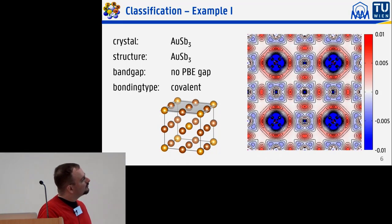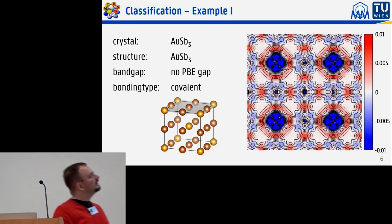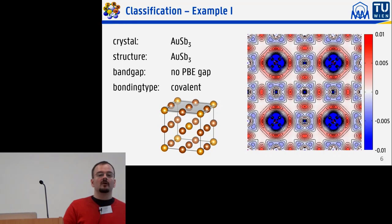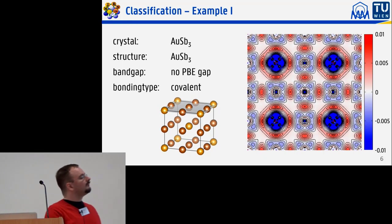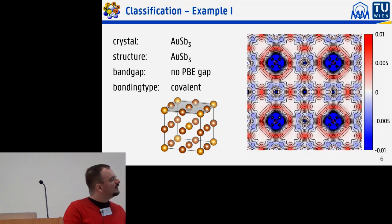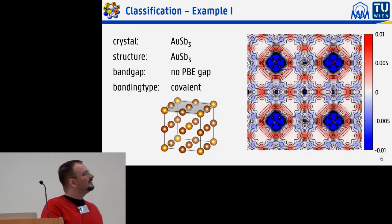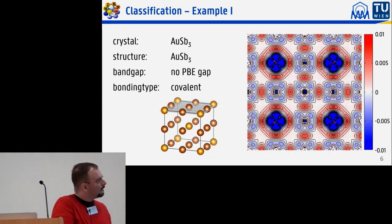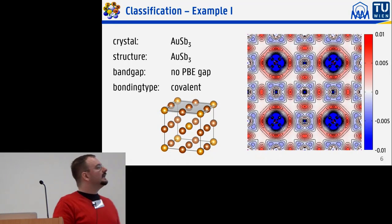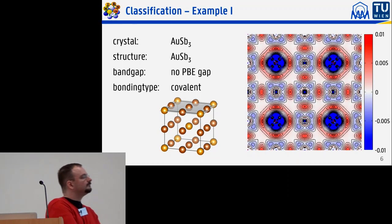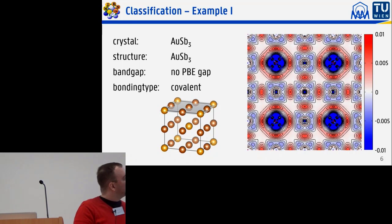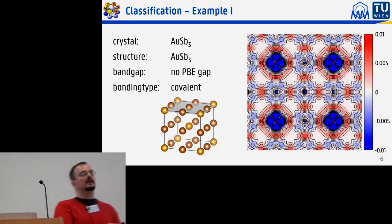For example, this picture shows the electronic difference density for a gold antimonide compound in its own unique structure type. It shows hardly any electron accumulation in the interstitial and non-spherical ISO lines around the atoms — which by my criteria is clearly covalent, not ionic as I initially misspoke.